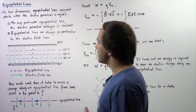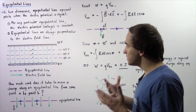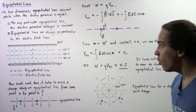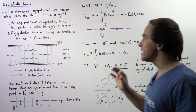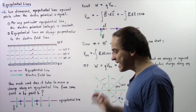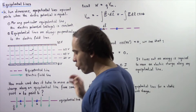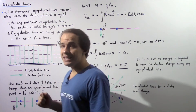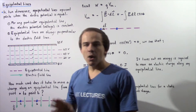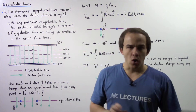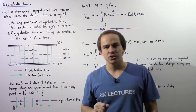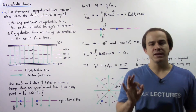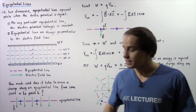In two dimensions, Equipotential Lines represent points where the electric potential is always the same. Now, whenever we draw Equipotential Lines, two things must be kept in mind.